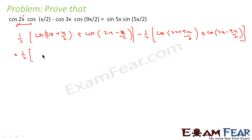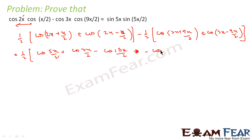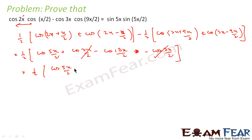Taking 1/2 as common, this becomes (1/2)[cos(5x/2) + cos(3x/2) − cos(15x/2) − cos(3x/2)]. The cos(3x/2) and −cos(3x/2) terms cancel, and what we get is (1/2)[cos(5x/2) − cos(15x/2)].